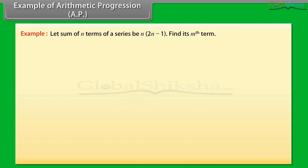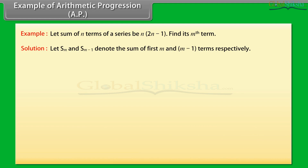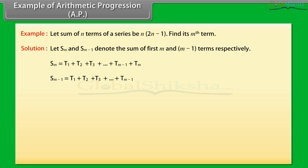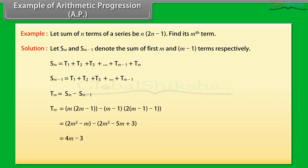Example AP: Let the sum of n terms of a series be n(2n−1). Find its Mth term. Solution: Let SM and S(M−1) denote the sum of the first M and M−1 terms respectively. SM = T1 + T2 + ... + T(M−1) + Tm; S(M−1) = T1 + T2 + ... + T(M−1). Then Tm = SM − S(M−1). On solving, we get Tm = 4M − 3.